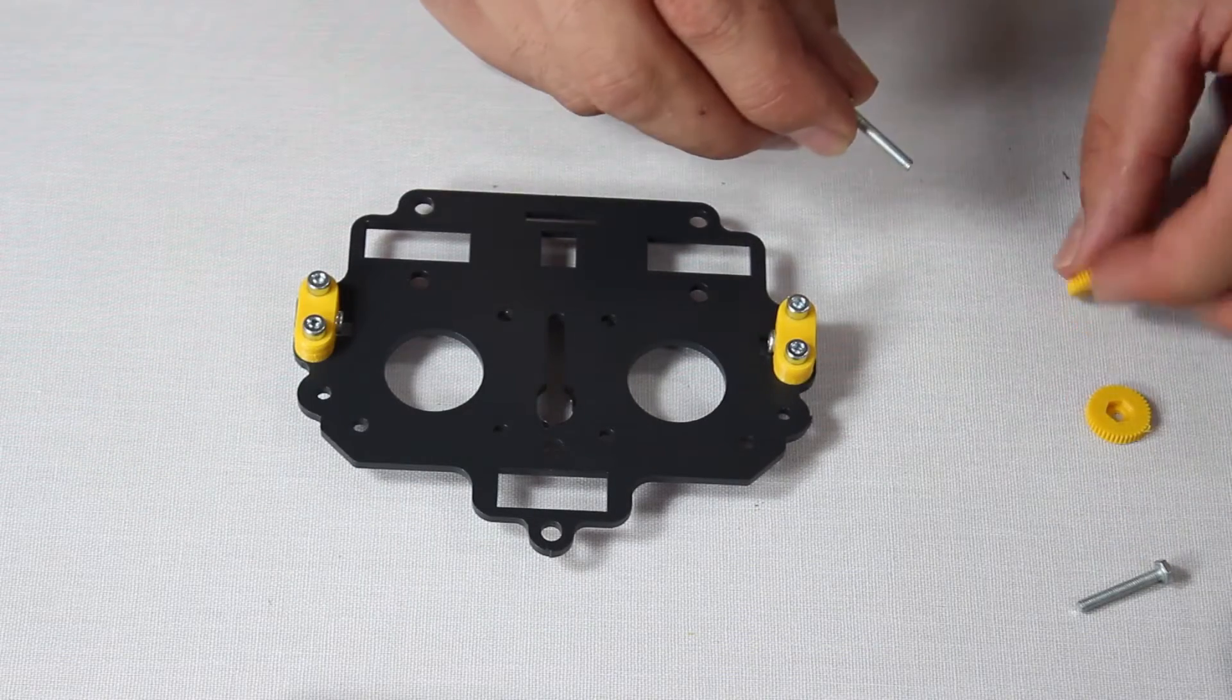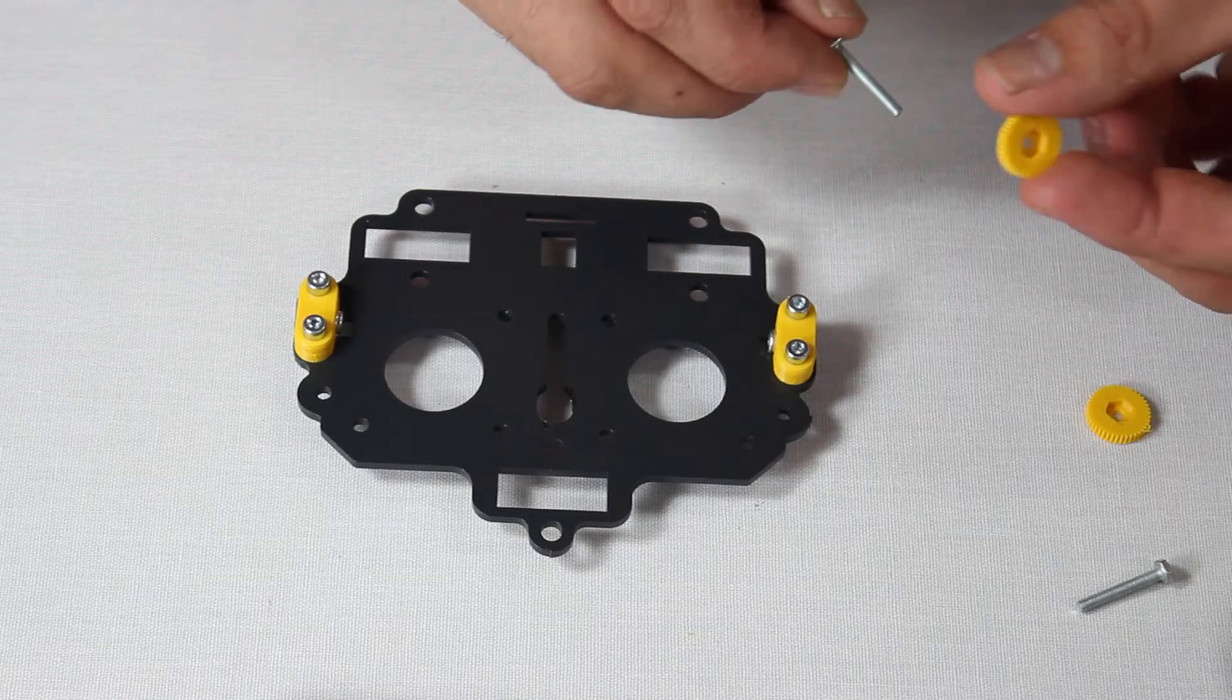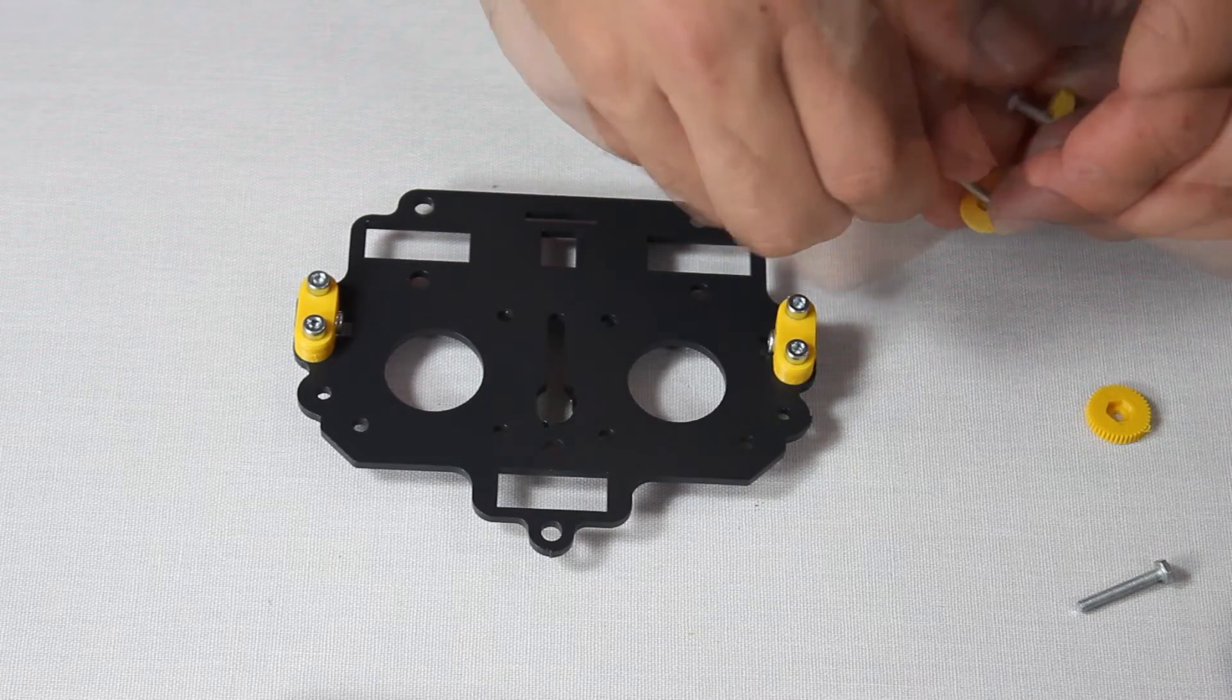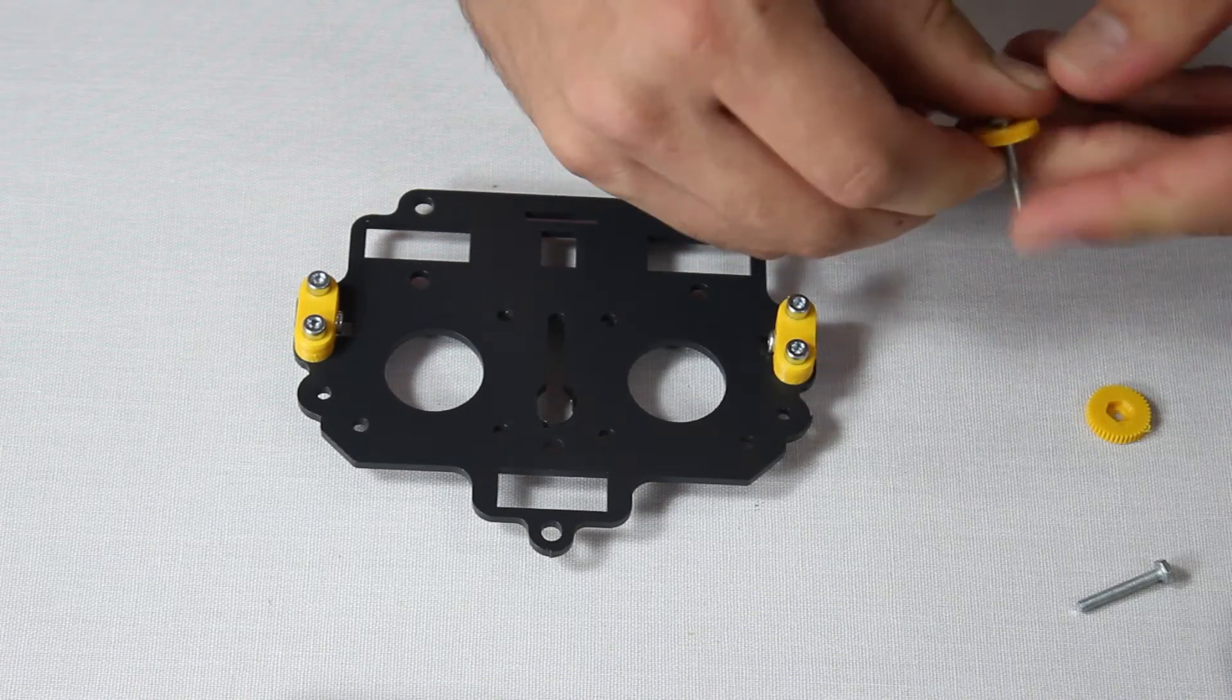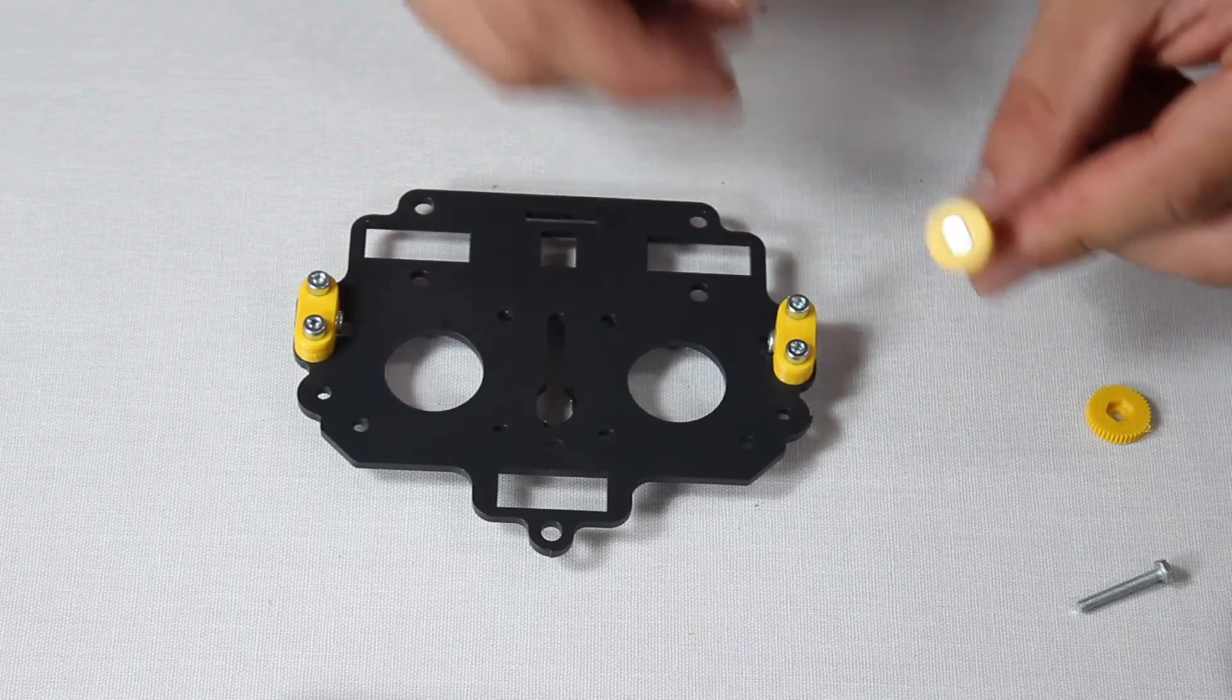Once you've done this, apply bolts to the printed cogs. Again, these have a predefined direction. The bolt heads must fit into the hexagon shaped recesses on the cog.